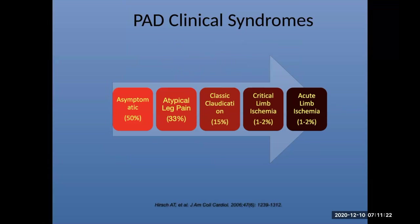Just to give everybody a reminder — remember there are several PAD pathways in terms of how patients present. The majority of patients are still asymptomatic; they have some level of peripheral arterial disease but aren't really manifesting symptoms yet. A third of patients present with atypical leg pain, 15% have classic claudication — they walk a certain distance, have discomfort in a certain part of the leg, it improves after five to ten minutes of rest, and it's reproducible.